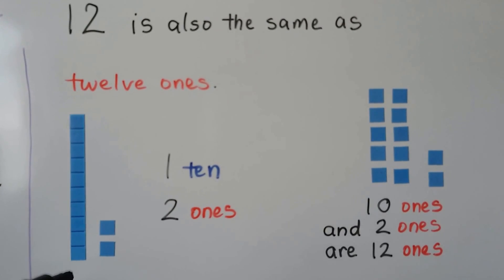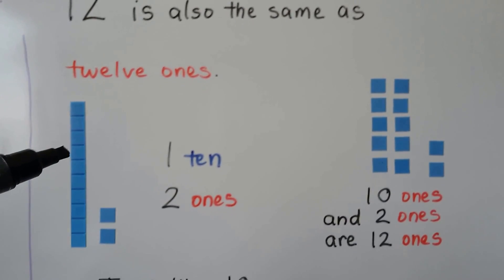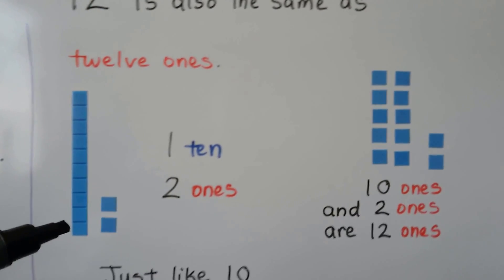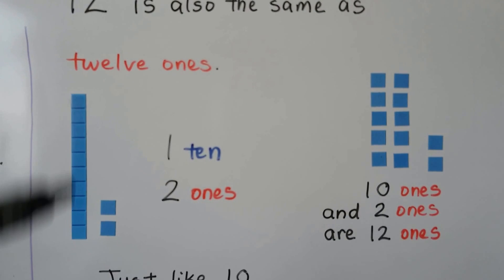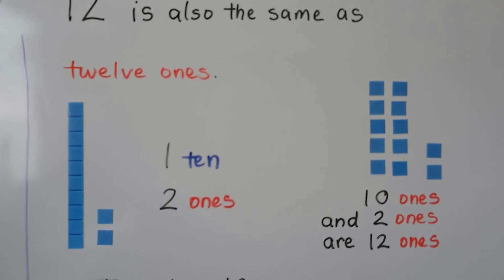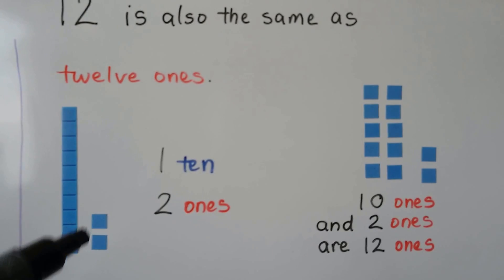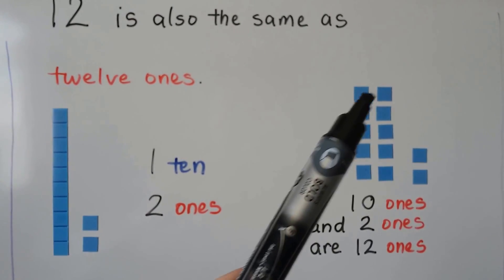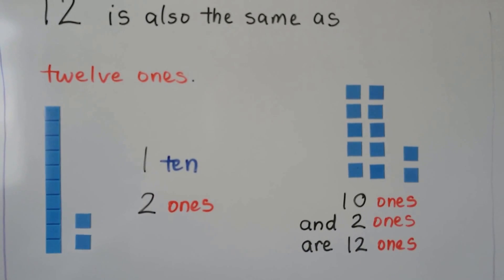We have a bar of 10 — 1, 2, 3, 4, 5, 6, 7, 8, 9, 10. Whenever you see this, that's a bar of 10. We have two ones. So 12 is a 10 and two ones. Or we can say it's 10 ones and two ones.